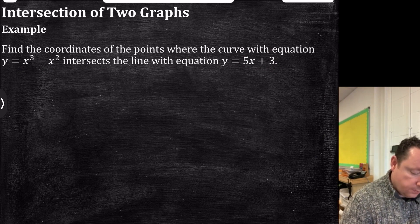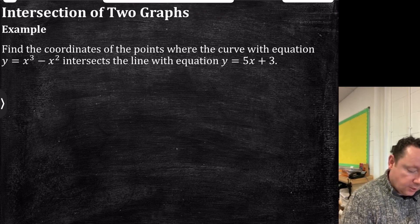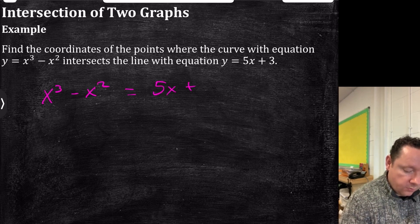So it's simultaneous equations. So since it's both y equals y equals, we can immediately just say that x cubed minus x squared equals 5x plus 3.